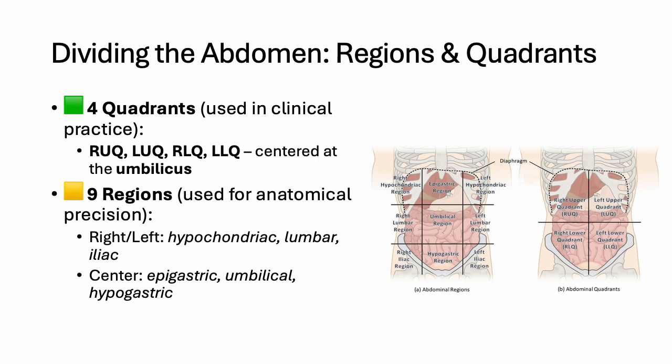When diagnosing abdominal pain or locating a mass, we use quadrants or regions to describe location. Quadrants are faster and used in emergencies; regions are more specific and used in anatomy and physiology. For example, the appendix is in the right lower quadrant or right iliac region. The four quadrants — right upper (RUQ), left upper (LUQ), right lower, and left lower — are centered at the umbilicus. For greater precision, we use nine regions: the right and left hypochondriac regions at the top, the lumbar regions in the middle, and the iliac regions at the lower sides. In the center are the epigastric, umbilical, and hypogastric regions.